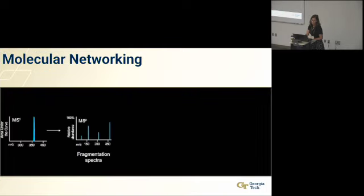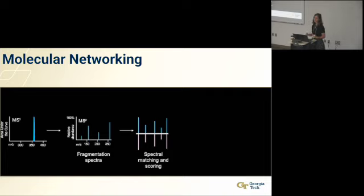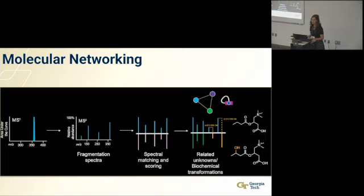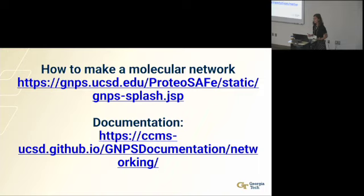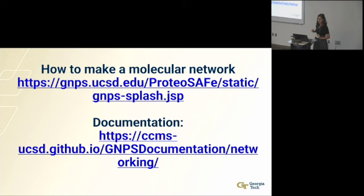We have our MS1 and MS2 spectra, and we work to match the spectra with library compounds. If you have a known metabolite feature, then any metabolite feature with spectral similarity can theoretically be annotated for functional group differences based on the chemical shifts in the MS2 spectra. There's excellent documentation about how to make a molecular network. With all these tools there's great documentation and great support online. This would be the link you'd go to to make a molecular network. If you have any questions about this, I'm happy to talk afterwards.